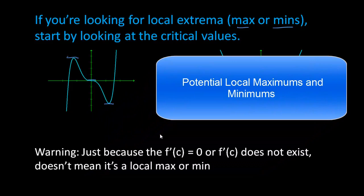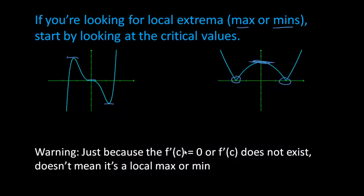Now we have this warning: just because f prime of c equals zero, meaning a slope of zero, or that the derivative doesn't exist, doesn't mean it's a local max or min.